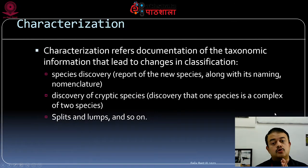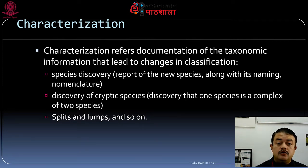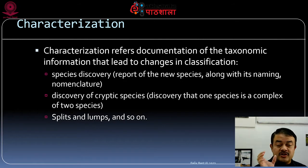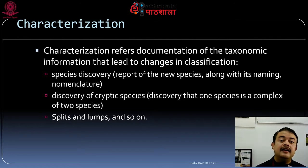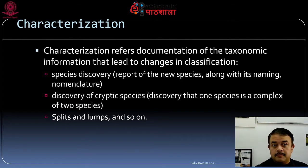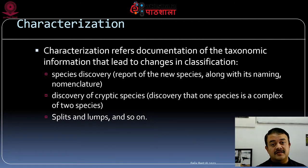Characterization and inventorying are two different terms. Characterization refers to the documentation of taxonomic information that leads to changes in classification — meaning species discovery, describing a new species with its nomenclature, and the discovery of cryptic species, where what was thought to be one species is actually a complex of multiple species. For example, giraffes were considered one species until recently; now we know there are at least seven cryptic species.